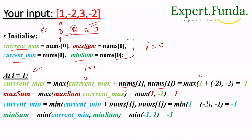At i=1, num[1] is -2. We calculate max(current_max + num[1], num[1]) = max(1 + (-2), -2) = max(-1, -2), so current_max becomes -1. Then max_sum = max(max_sum, current_max) = max(1, -1) = 1. For current_min: current_min + num[1] = 1 + (-2) = -1, so current_min = min(-1, -1) = -1.